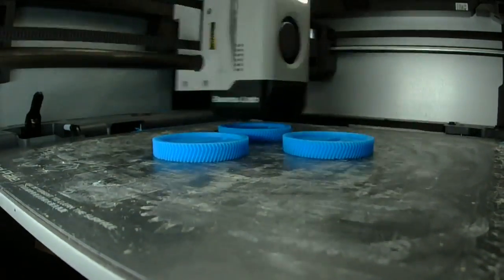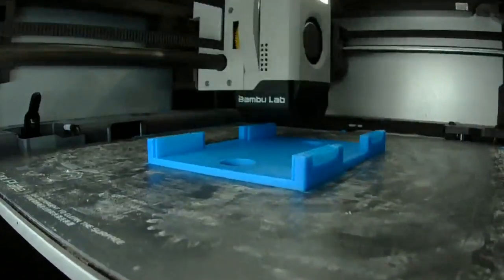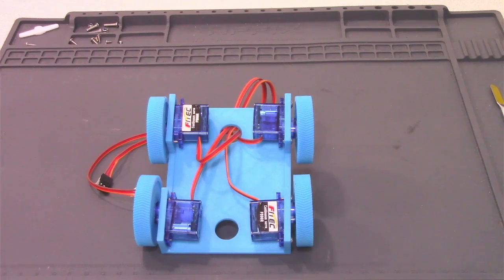All right, let's get the rest of the rover printed. Print three more wheels and a body to hold the servos and the Raspberry Pi that will be used to power the whole thing.